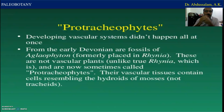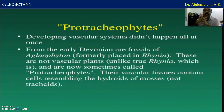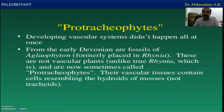From the early Devonian are fossils of Aglaophyton, formerly placed in Rhynia. These are not vascular plants, unlike true Rhynia, and are now sometimes called pro-tracheophytes. Their vascular tissue contains cells resembling the hydroids of mosses and the embryophytes. Pro-tracheophytes are actually the predecessors of pteridophytes, and this developmental sequence is clear here.